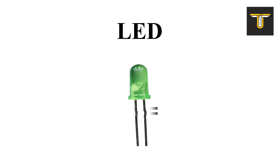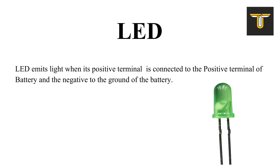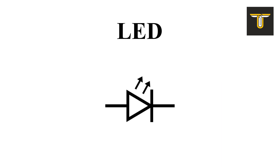Another common component of any electronic circuit is the light emitting diode, generally called LED. It is a two-terminal component that emits light. The positive terminal of the LED is connected to the positive terminal of the battery and the negative terminal to the ground. The symbol of LEDs looks like this.